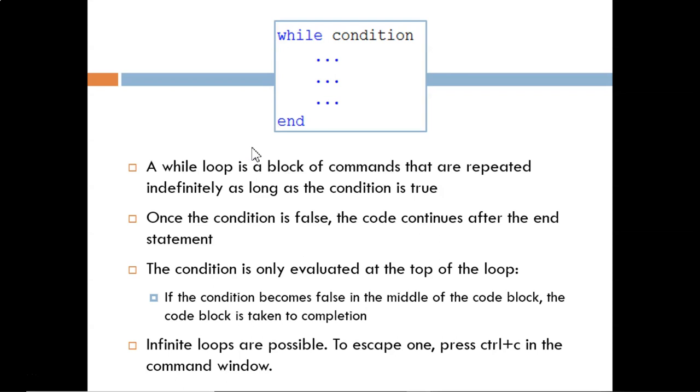The condition is only evaluated at the start of the loop, so if that condition becomes false halfway through the loop, that won't be noticed until the full loop is completed. It is possible to have an infinite loop, one in which the condition never becomes false. To halt this, press Ctrl-C in the command window.